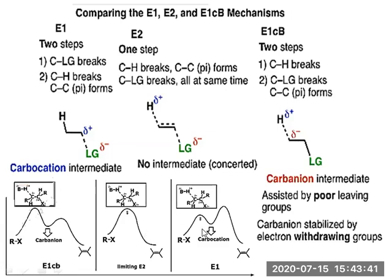Regarding kinetics, E1cB and E1 are two-step reactions, so two energy maxima and two transition states are observed, with an intermediate formed — a carbanion in E1cB and a carbocation in E1. In E2 elimination, only one energy maximum and one transition state are observed; it is a single-step reaction with no intermediate. In all cases, an sp³ carbon is converted to an sp² carbon, or if starting from sp², you get an sp carbon in the product.